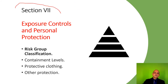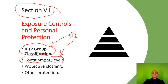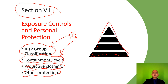Section seven focuses on exposure controls and personal protection. This is where you address risk group classification of biological agents into the four risk groups, and the containment levels at your laboratory or facility. If you are working with risk group 3 and above, you need to have the appropriate BSL facility. Protective clothing and PPEs are very important, and I have included the basic hierarchy here to indicate the mitigation strategy which we will discuss in the lecture series on risk mitigation.